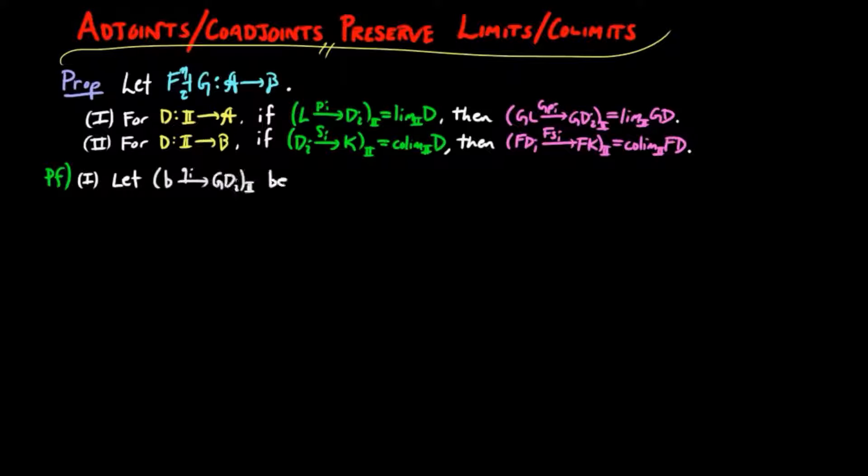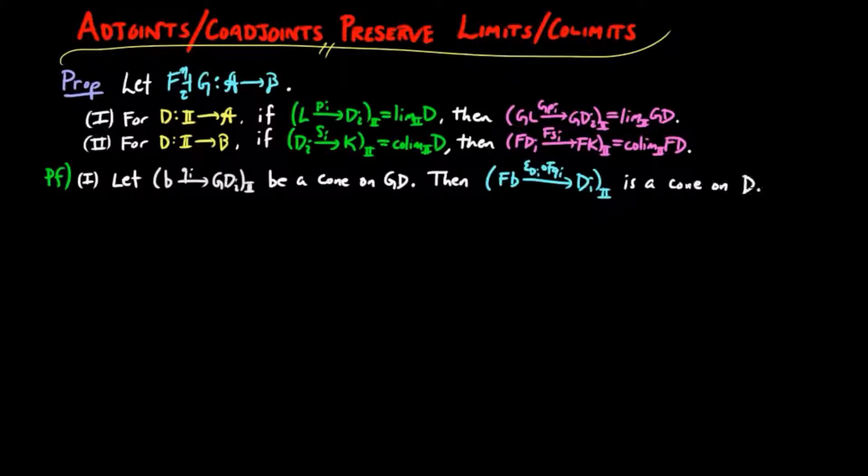To prove one, let B,qi be a cone on GD. Then FB,εDi∘Fqi is a cone on D, since for an i-morphism in D the diagram below commutes. The right-hand square is a naturality square for ε and the left triangle commutes because B,qi is a cone on GD and a functor preserves cones.